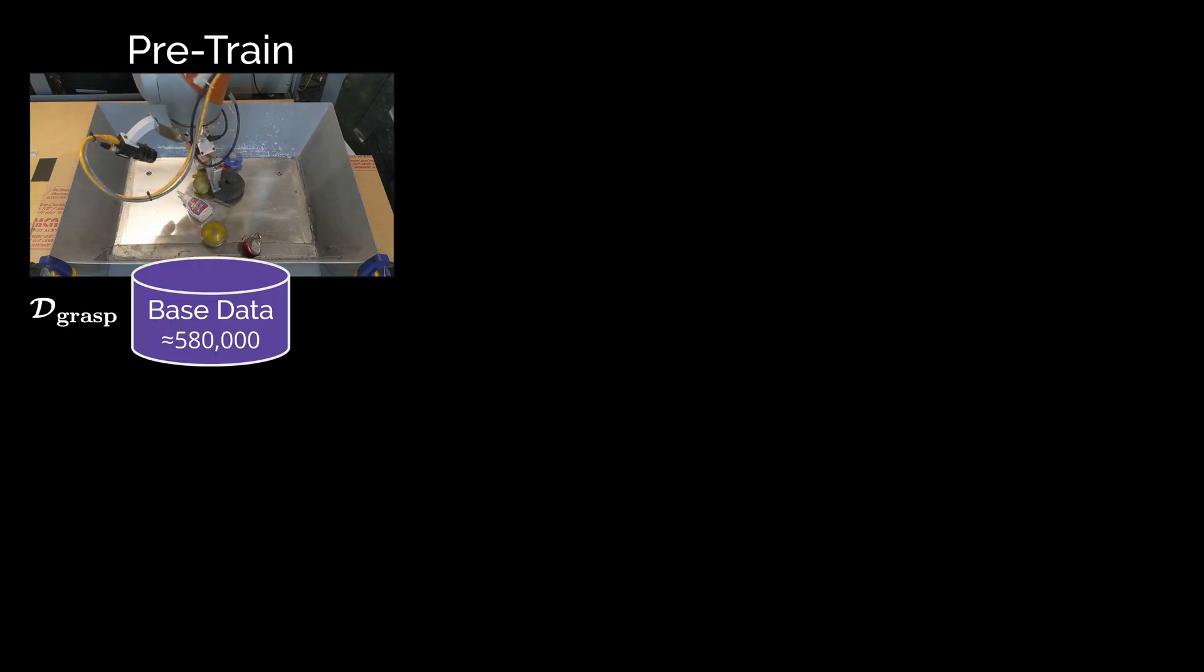In our experiments, we first pre-train a general grasping policy as described in previous work. To do this, we use a dataset of 580,000 grasp attempts to train a Q function offline with the QTOpt algorithm. We then augment this offline training process by training online for 28,000 additional grasp attempts, yielding what we refer to as the base Q function. This achieves an 86% success rate on a challenging subset of test objects, which we use throughout this study.